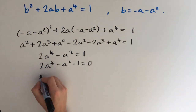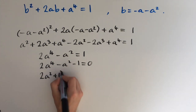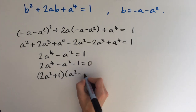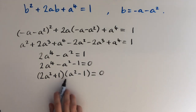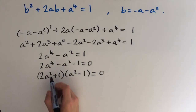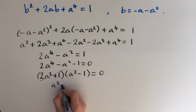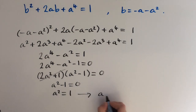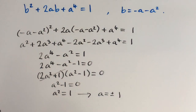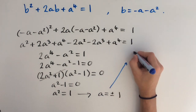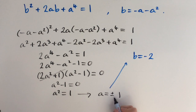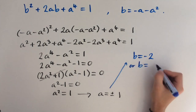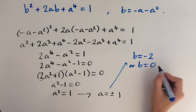Bringing the 1 over, we get 2a to the 4 minus a squared minus 1 equals 0. This factorizes as 2a squared plus 1 times a squared minus 1 equals 0. The first bracket has no real solutions, so we just need a squared minus 1 equals 0, giving a squared equals 1. So a equals plus or minus 1. Plugging a equals 1 into our expression for b gives b equals minus 2, and plugging in a equals minus 1 gives b equals 0. These are our answers.